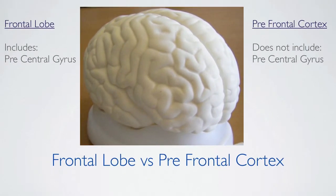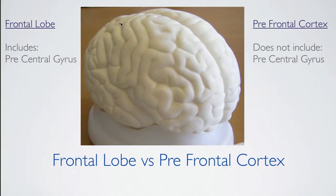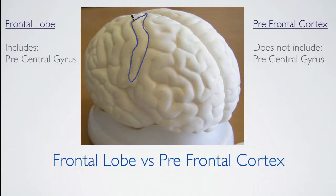So if you look at a brain, you first want to find the central sulcus. On this model brain, the central sulcus would be around here, and the precentral gyrus would be here. The frontal lobe includes the precentral gyrus, whereas the prefrontal cortex does not include it — so it would be from here to over here.